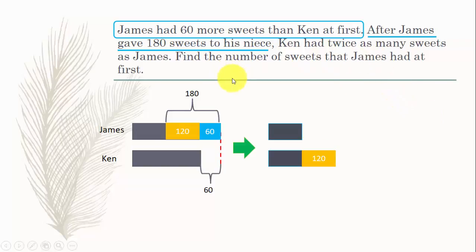And now Ken had twice as many sweets as James. So what Ken has is two times what James has. If James is one unit here, this has to be one unit and this has to be one unit. So what James has here is one unit, which is actually equivalent to this place here, one unit, which is 120.